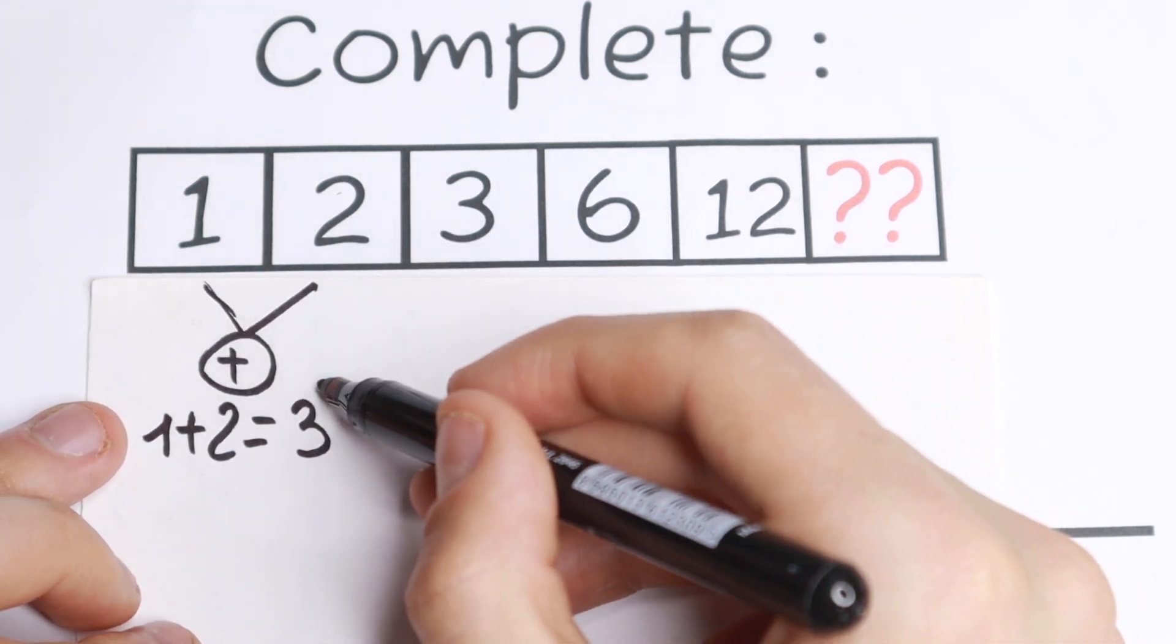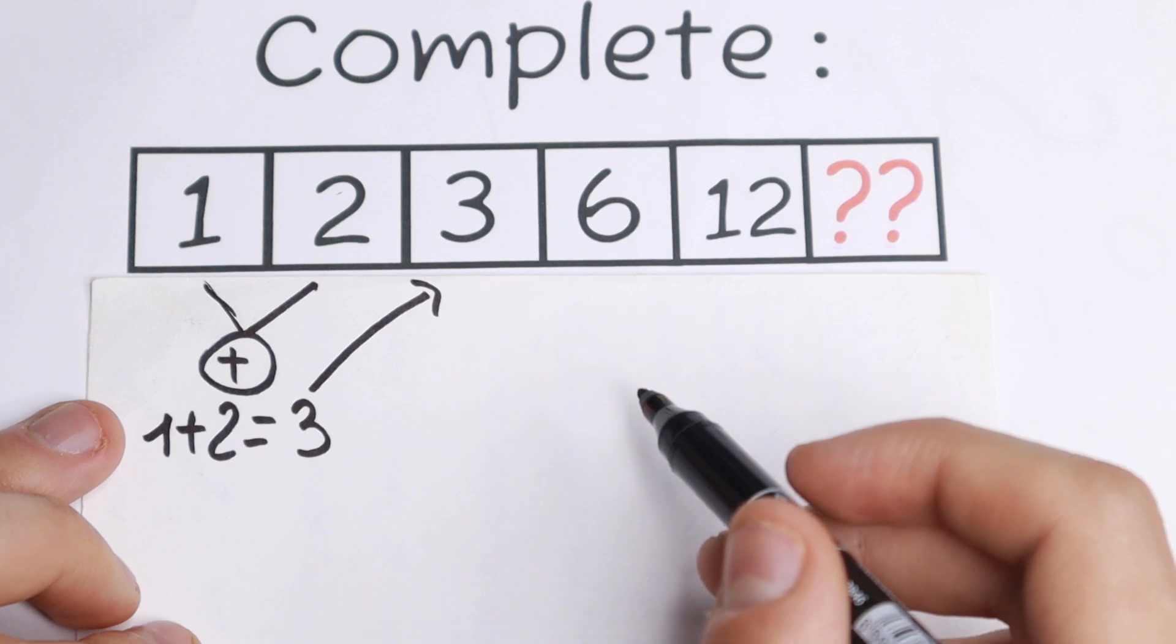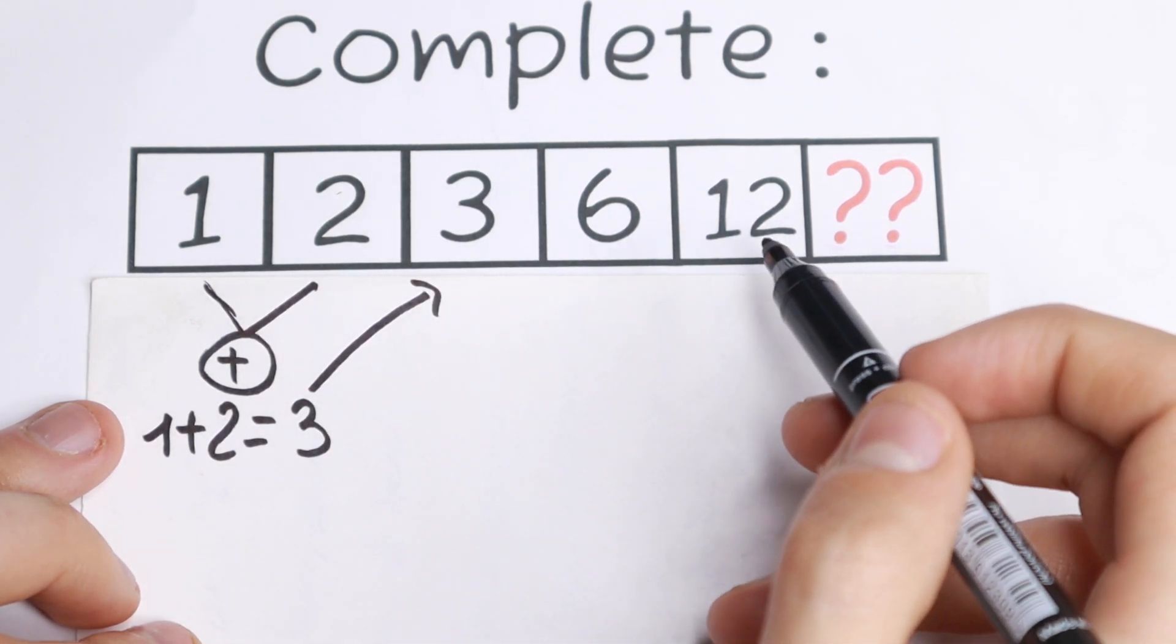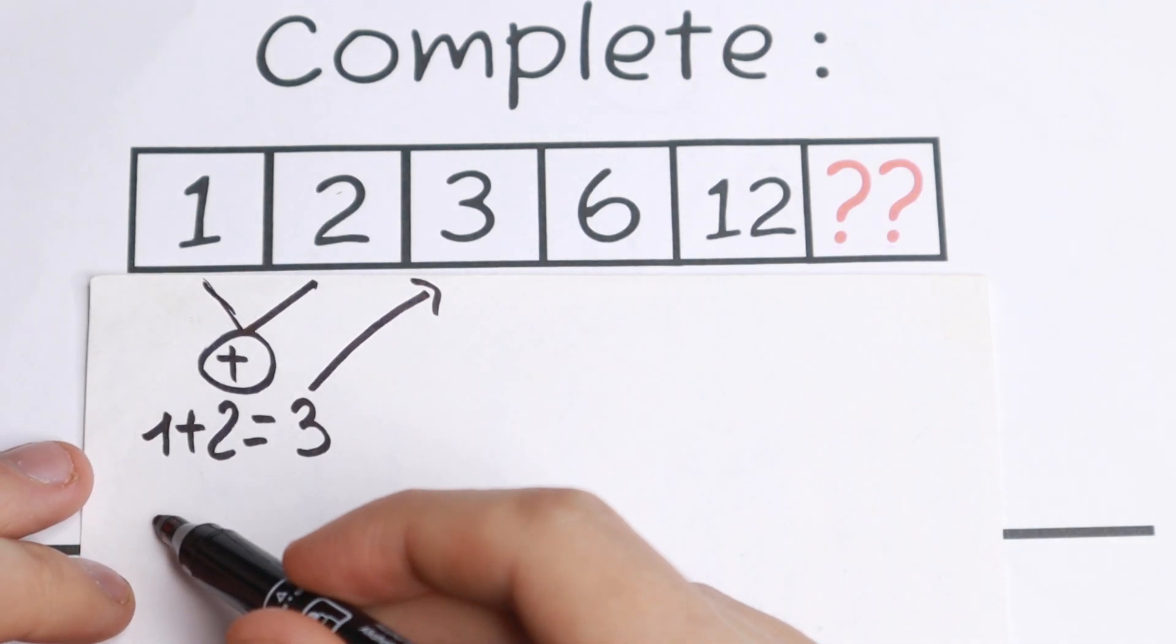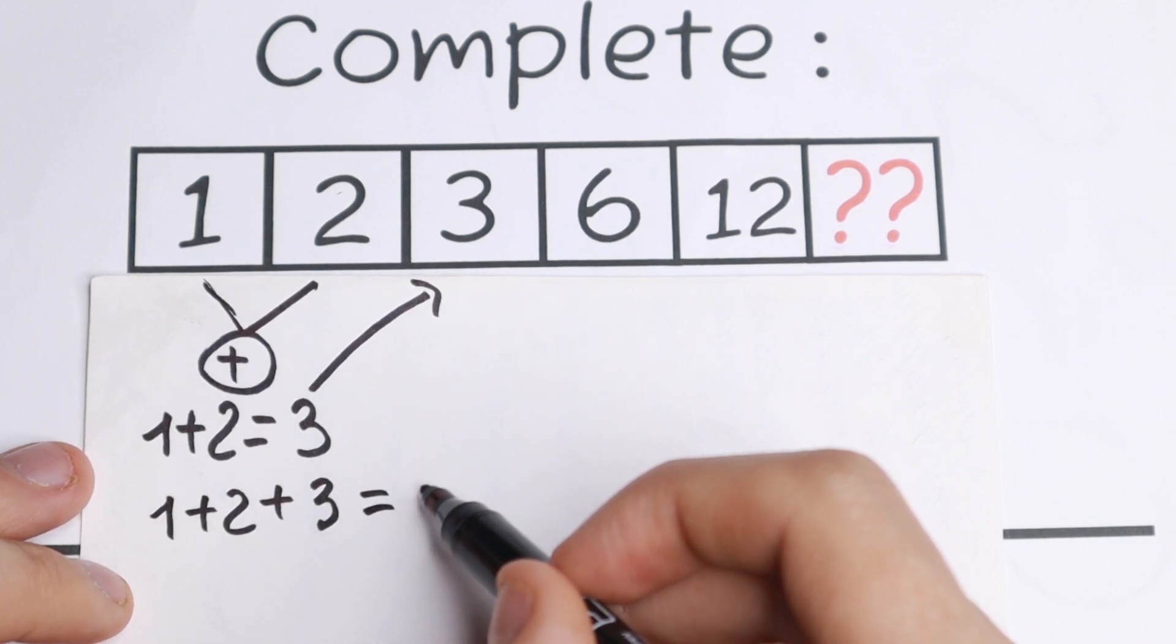So as you can see if we add these two numbers, this will be equal to 3. The next one, what are we going to do? Let's add the first three digits. We will have 1 plus 2 plus 3, we will have 6.